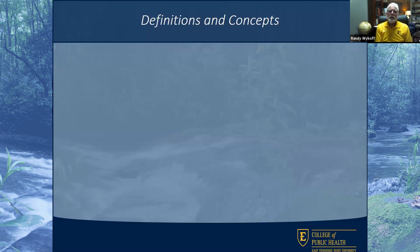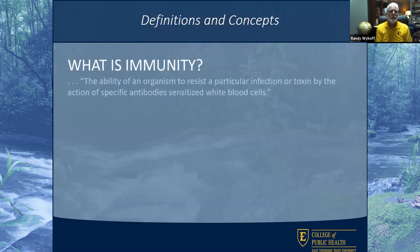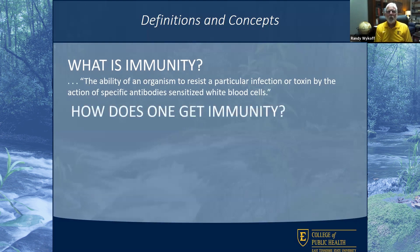Let's start with a couple of definitions and concepts. First of all, what is immunity? Immunity is the ability of an organism — in this case a human being — to resist a particular infection. One gets immunity normally one of two ways, though there are actually four ways one can be immune.